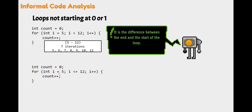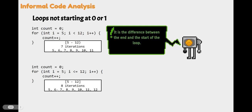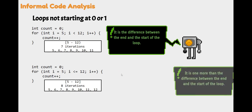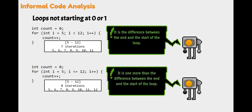Directly below that, we are initializing I to five, looping while less than or equal to 12, counting up by one. That's five through 12 inclusive — eight iterations: 5, 6, 7, 8, 9, 10, 11, and 12. When both of the numbers are included, it is one more than the difference between the end and the start of the loop. So 12 minus five gives us seven, but now we are including the last number, so we need to add one more. That's where we get the eight.